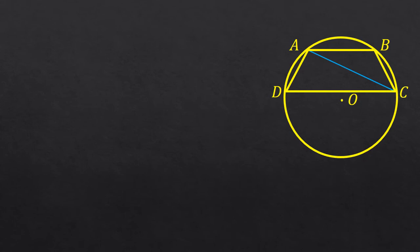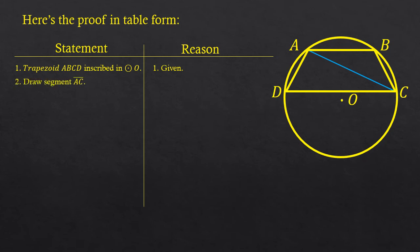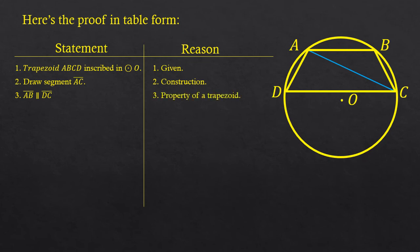Once we have all of the steps, we can organize them into a table in statement-reason form. The first statement is: trapezoid ABCD is inscribed in circle O. The reason is that this is the given information. Statement two: draw segment AC. The reason is construction — we can draw additional auxiliary lines on any figure. The third step is that segment AB is parallel to DC, because the bases of a trapezoid are parallel to one another.